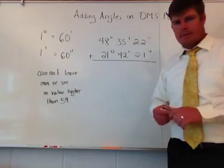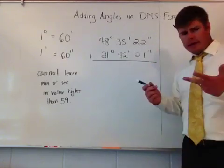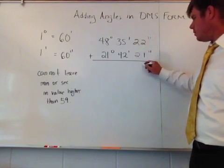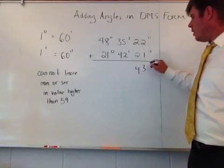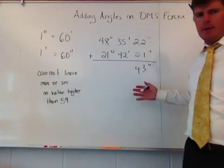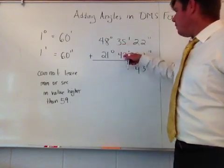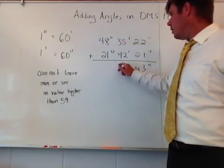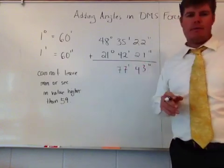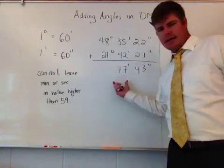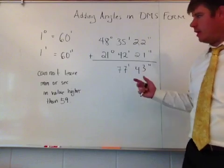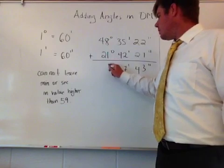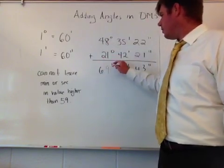Let's get started. We're just going to add columns up as they are. So 22 and 21: 2 plus 1 is 3, 2 plus 2 is 4, so I get 43 seconds. That's not higher than 59, we just leave it. 35 and 42: 5 and 2 makes 7, 3 and 4 makes 7, so I get 77 minutes. We'll talk about how we're going to change that in a second because it's higher than 60. Then 48 and 21: 8 and 1 makes 9, 4 and 2 makes 6—69 degrees.